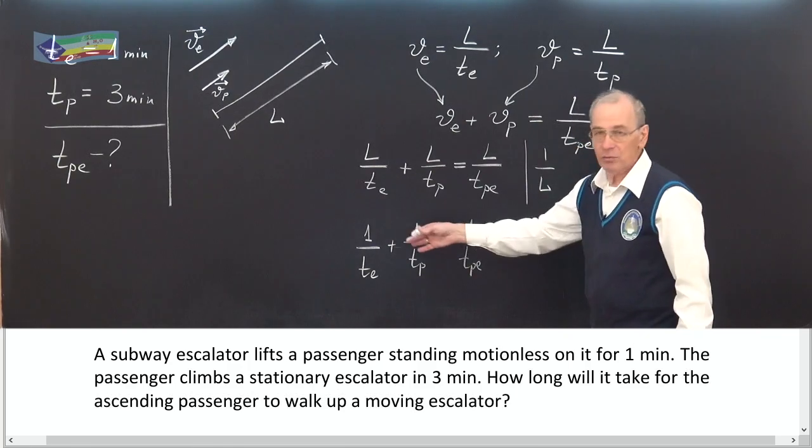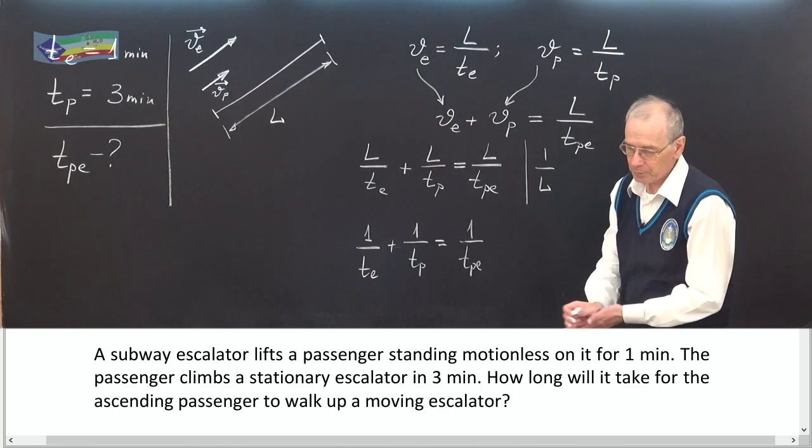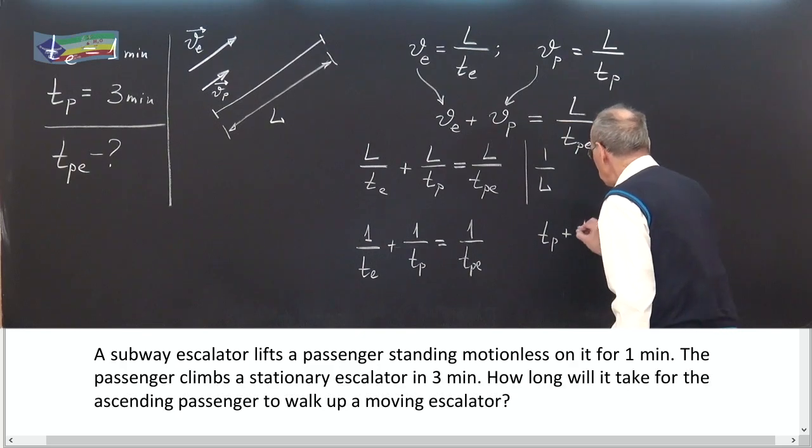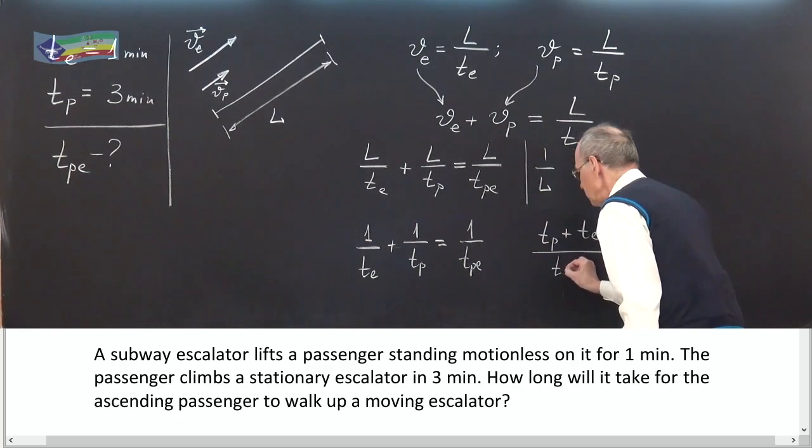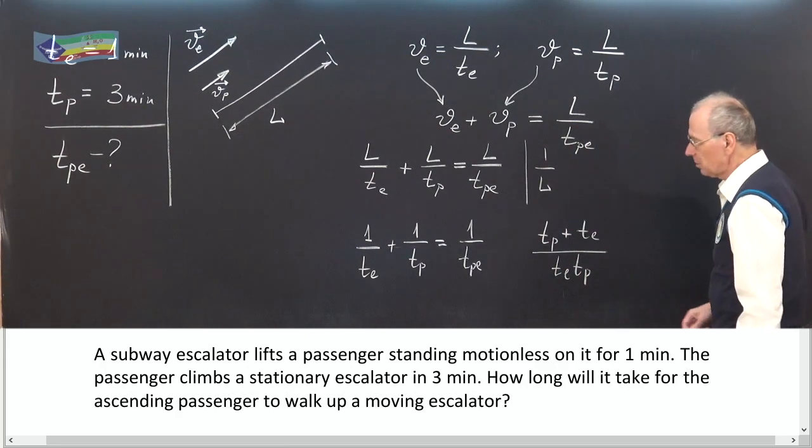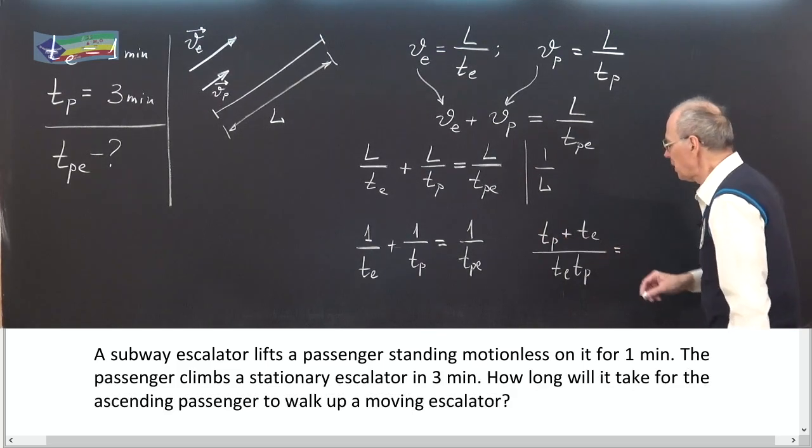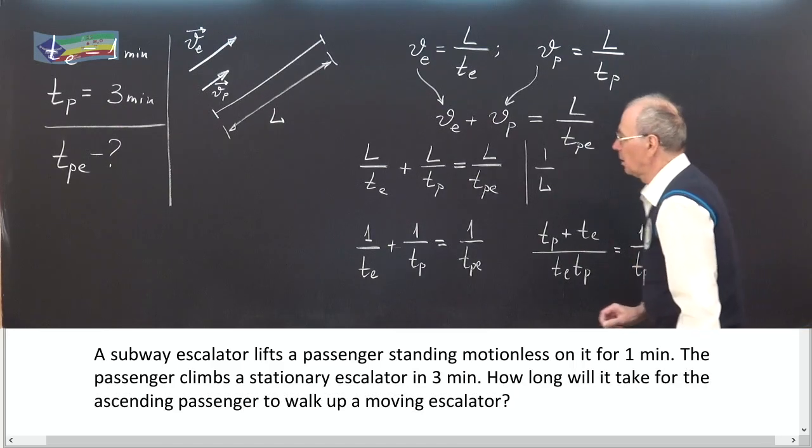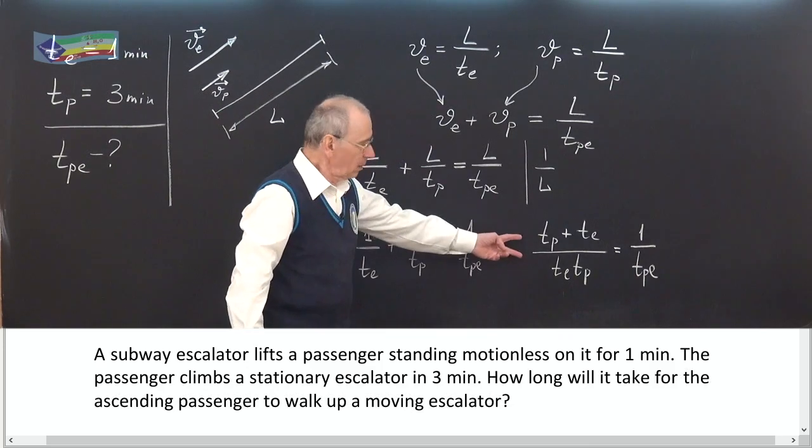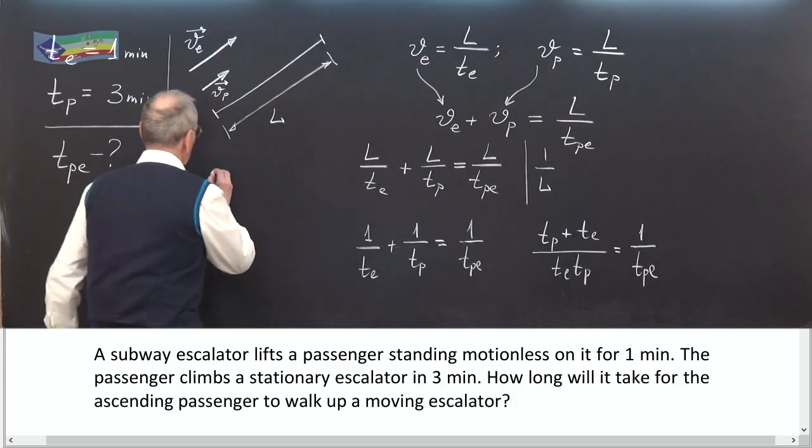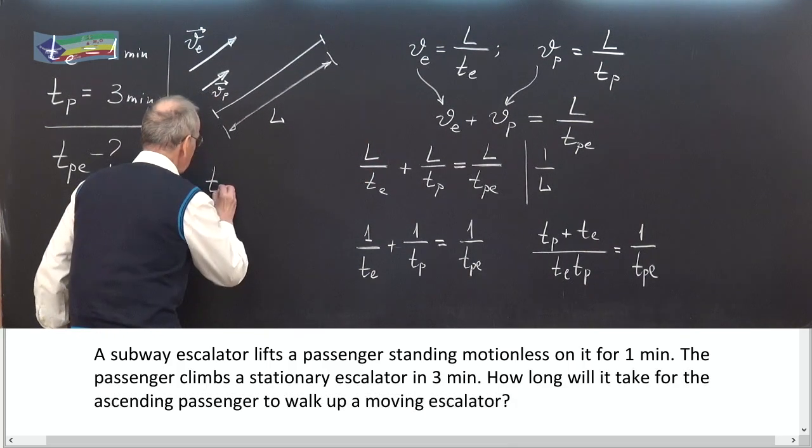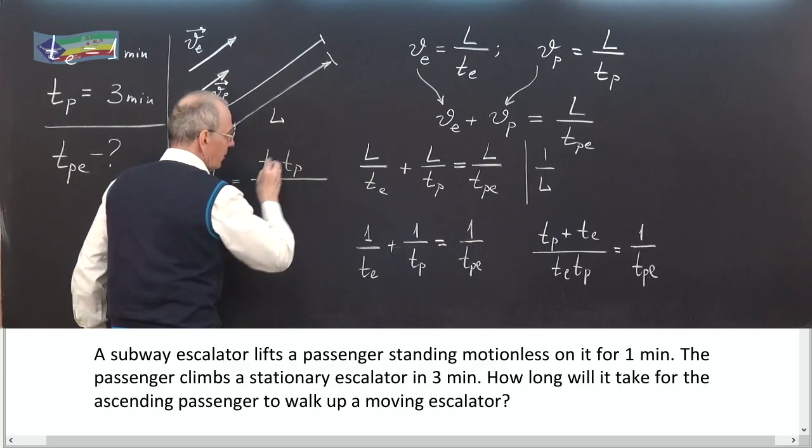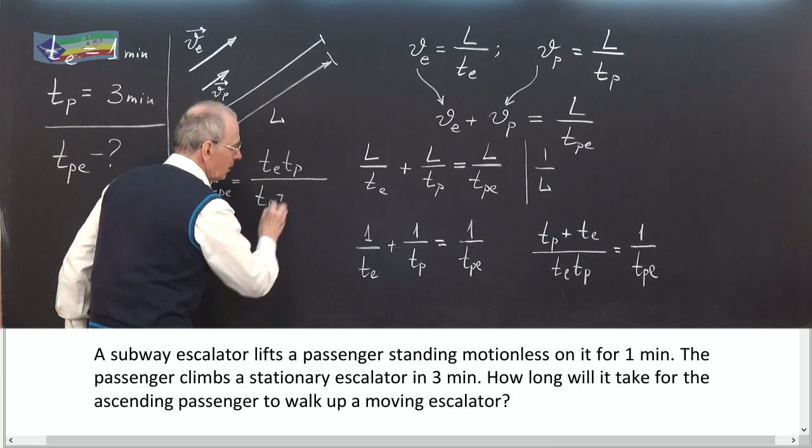Now let's bring these two fractions to common denominator. And we have TP plus TE over TP times TE in the left part of the equation and in the right part 1 over TPE. And finally, invert this fraction, TPE equals TP times TE divided by TP plus TE.